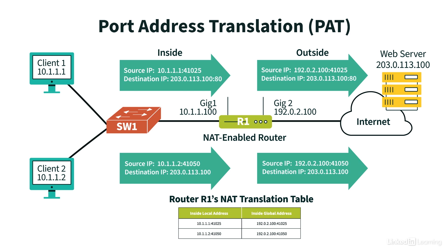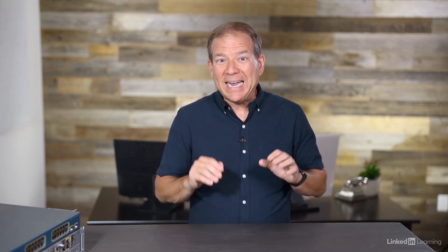As an example, when the web server sends a packet back into the network, it's destined for 192.0.2.113.100 — the inside global address being used by both Client1 and Client2. But in addition to that, let's say the packet coming in from the web server has a destination port number of 41,050. When Router R1 sees that, it looks at its NAT translation table and realizes that packet needs to be forwarded to Client2. And that's a look at how network address translation can help extend the usefulness of IPv4 addresses by letting millions of networks around the world use the same set of private IPv4 addresses inside their network, and have those addresses translated into a much smaller number of publicly routable IPv4 addresses.